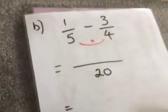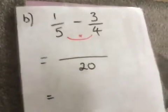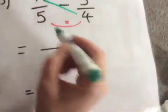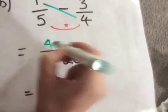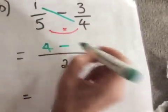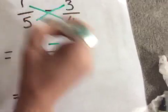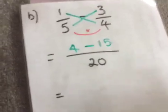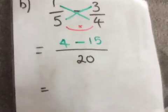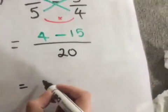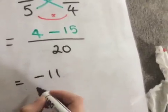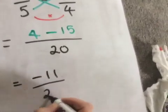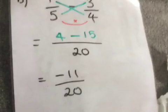Then we're going to do our kissing, and that means we need to multiply the top number by the bottom number. So we've got 1 times 4 is 4, and then we're going to take away 3 times 5 is 15. Now you must do it in that order because we can't change the order that we subtract in. So then we're going to do 4 take away 15, and that gives us negative 11, and that's over 20, and that's our final answer.